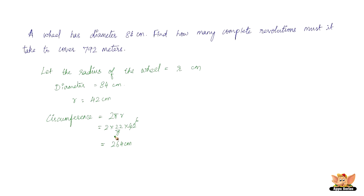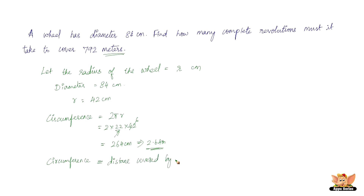Since the distance is given in meters, let us convert the circumference into meters. 264 centimeters divided by 100 gives 2.64 meters, because 1 meter is 100 centimeters. So the circumference is 2.64 meters. The circumference is the distance covered by a wheel in one revolution, so this wheel covers 2.64 meters in one revolution.